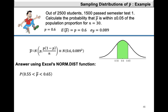Minus NORM.DIST(0.55, 0.6, 0.089, TRUE), which gives the area to the left of 0.55. The difference between these two gives us 0.4238, which is similar to the previous answer but more accurate since we're using Excel functions. In general, when using the NORM.DIST function, the first entry is the value of P-bar for which you want the area to the left, the second entry is the mean of P-bar which equals the population proportion P, the third entry is the standard deviation of P-bar, and the final entry is TRUE since we want the cumulative area to the left.